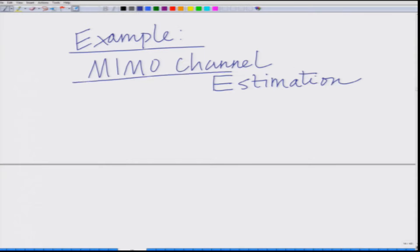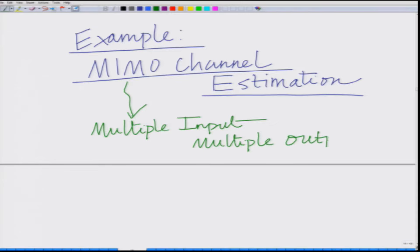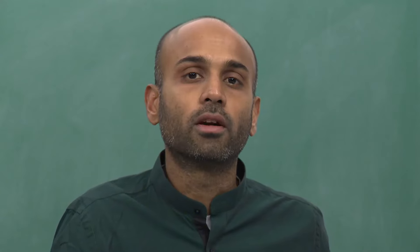MIMO stands for multiple input, multiple output. The multiple inputs mean multiple transmit antennas that input multiple symbols into the wireless channel, and multiple outputs refer to the multiple receive antennas which receive multiple output symbols from the wireless channel.